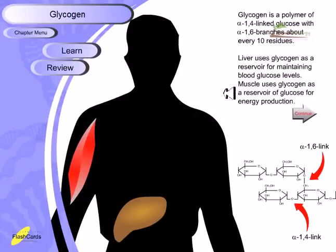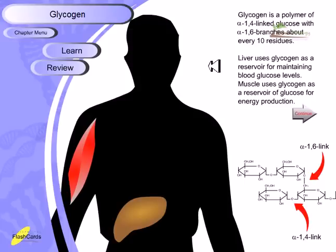When we are in a starved condition we need to produce glucose, and in those situations the rapid generation of glucose can easily be done by breaking down glycogen. Glycogen is a polymer of alpha-1,4-linked glucose with alpha-1,6 branches, as you can see in this picture, and this branching can be found in one in every ten residues.